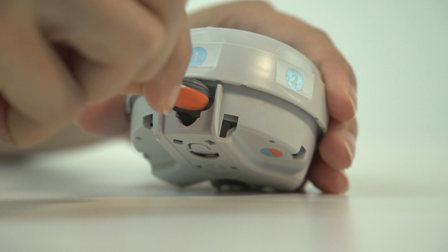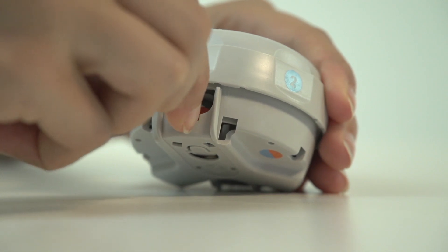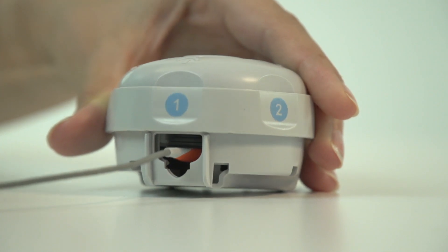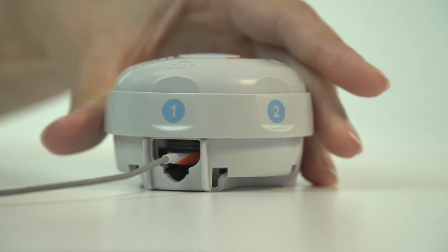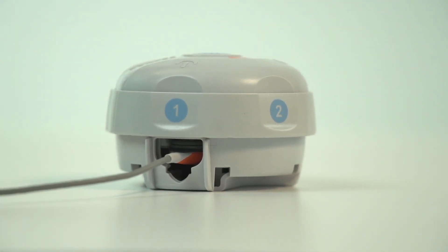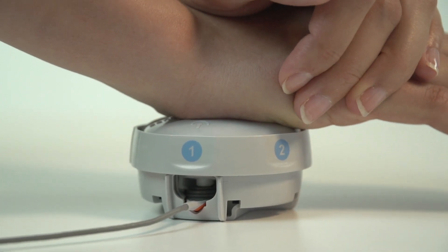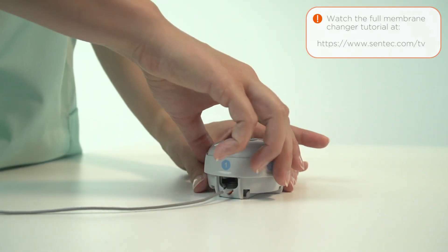Once the sensor is dry, you will need to replace the membrane. Carefully insert the sensor into the membrane changer without touching the exposed sensor surface. Make sure the sensor is aligned correctly. Proceed with the membrane change as usual with the alternating pressing and turning steps.